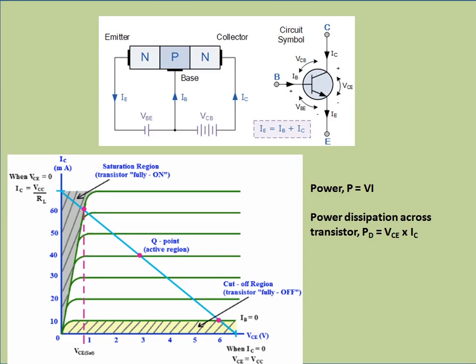A transistor is used as the control element in the linear power supply. The voltage across the collector is V_CE and the current through the collector is I_C. These correspond to the different operating regions of the transistor, which can be understood from the output characteristics of the transistor.